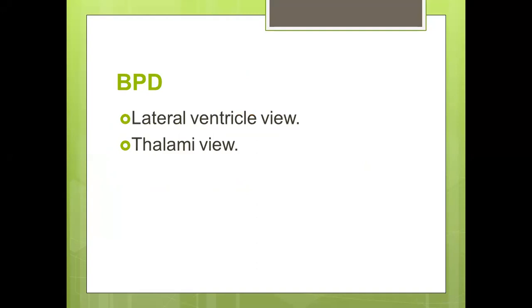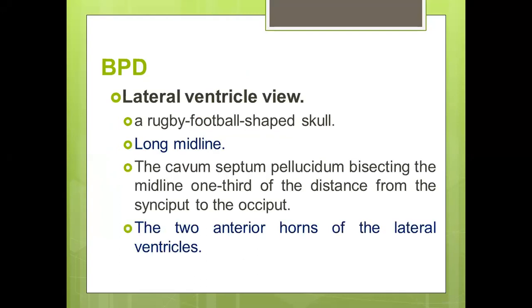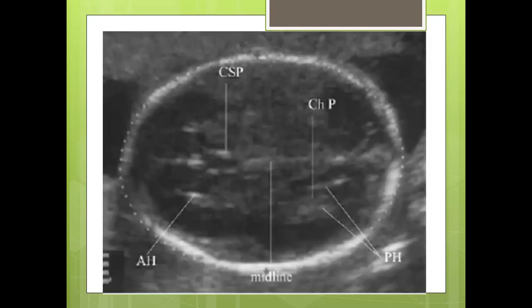First, biparietal diameter. We can measure biparietal diameter in two views: either the lateral ventricular view or the thalamic view. The lateral ventricular view should be in the shape of a rugby football — oval, not circular. There should be a long midline, not a short midline. The cavum septi pellucidi should be bisecting the midline at one third between anterior and posterior, and the two anterior horns of the lateral ventricles should be visible.